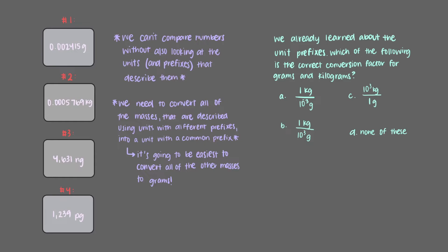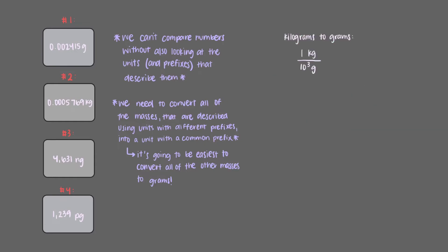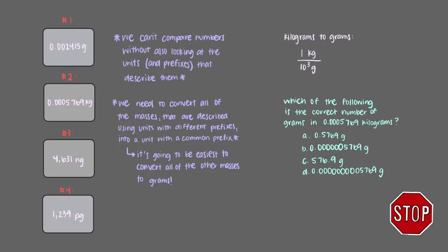Out of the options here, the only correct answer is this one. Now that we know what our conversion factor is, which of the following is the correct number of grams in 0.0005769 kilograms?